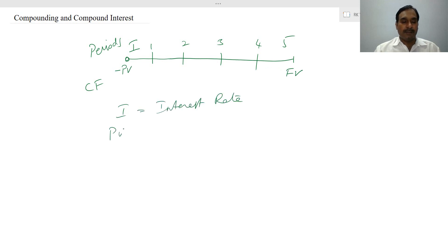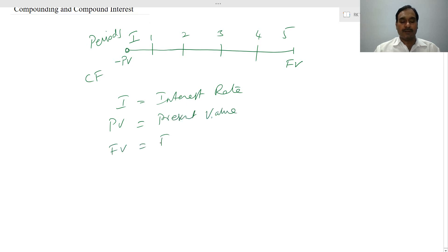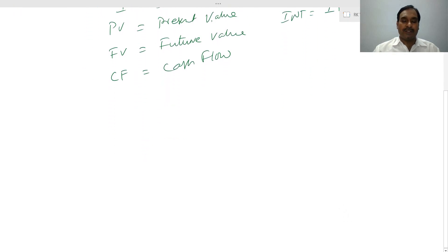I is interest rate, PV indicates present value, FV talks about future value, CF is cash flow, periods indicated as N, and INT indicates interest amount. Now how are we going to use the concept of compounding?